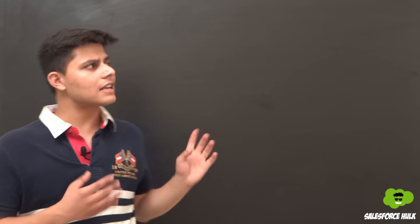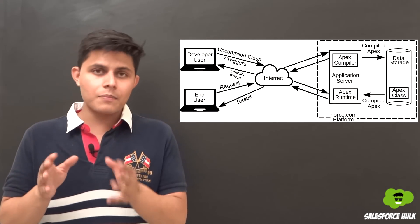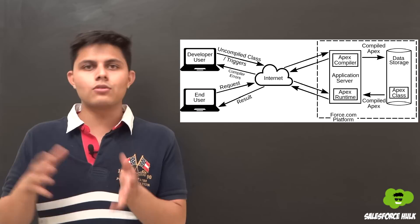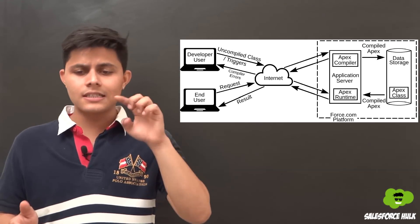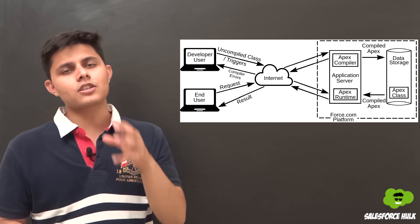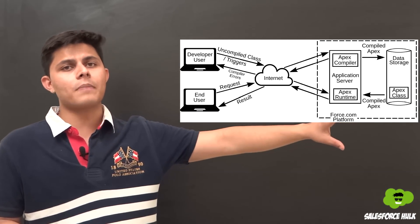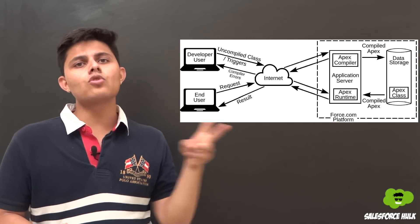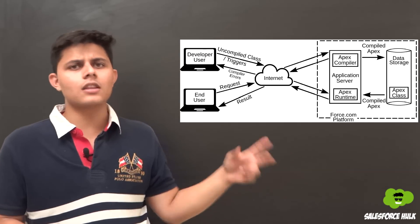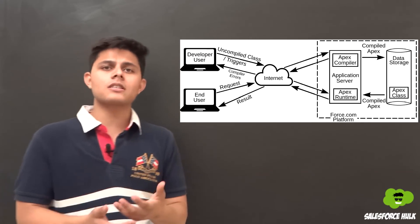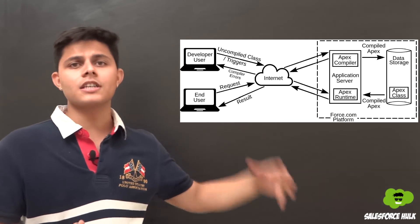Now let's talk about the flows of action involved with Apex. They are divided into two parts: developer action and end user action. In the developer action flow, a developer writes an Apex class or Apex code on their computer, and when they hit save, that code goes via the internet to the Force.com platform servers. There, two components handle it: the Apex compiler and the Apex runtime. The Apex compiler compiles the code and stores the compiled Apex in data storage.